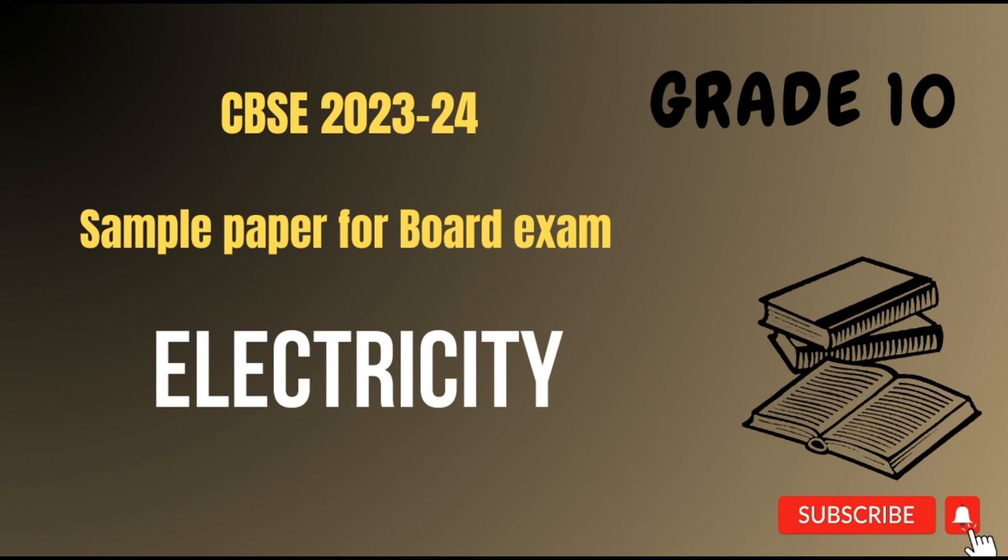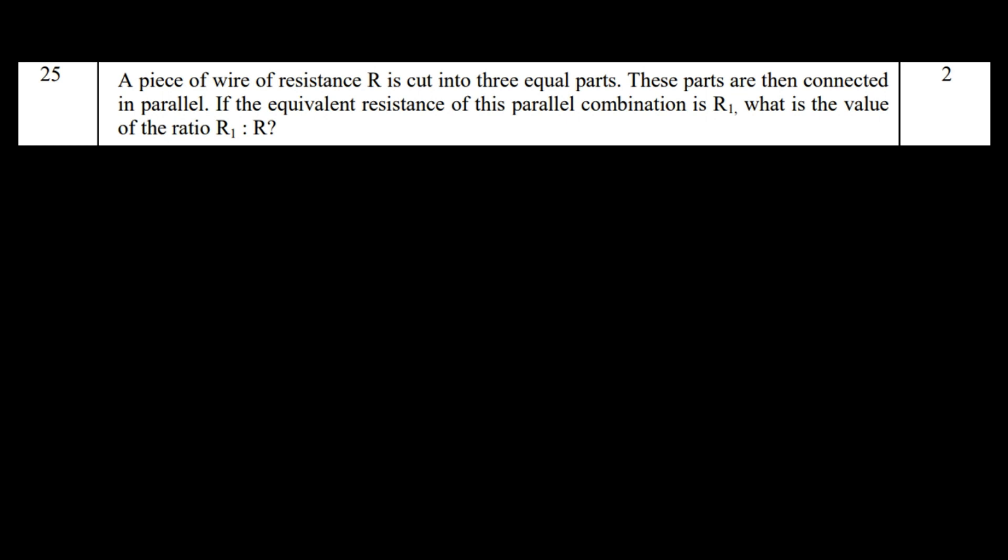A piece of wire of resistance R is cut into three equal parts. These parts are then connected in parallel. If the equivalent resistance of this parallel combination is R₁, what is the value of the ratio R₁ is to R? This question is directly from your NCERT. I think in your book it was cut into five pieces, that's the only difference. It was in the exercise questions. So straight away you're getting a question from your book. It's two marks from this chapter.